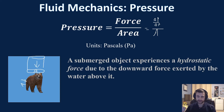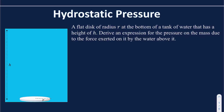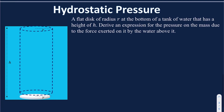There's a formula for hydrostatic pressure. It's a fairly easy formula, but as a Physics 2 student, you should know how to derive it. So we're going to look at the derivation. A flat disk of radius r is at the bottom of a tank of water that has a height of h. We're going to derive an expression for the pressure on that disk due to the water above it — only the water directly above it, which forms a cylinder above the circular disk.